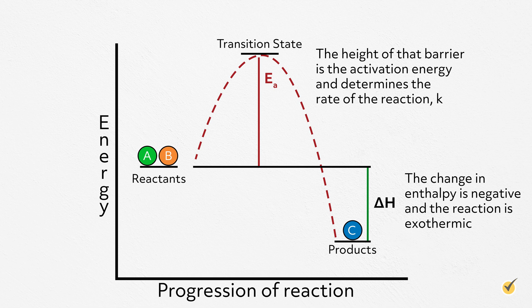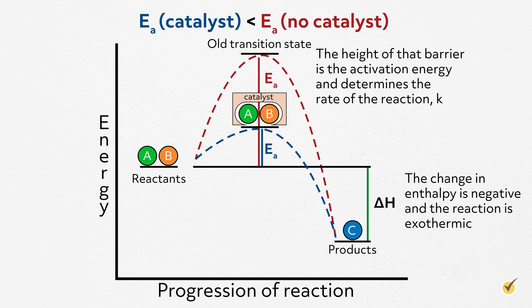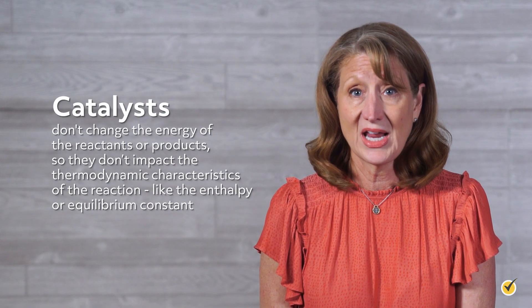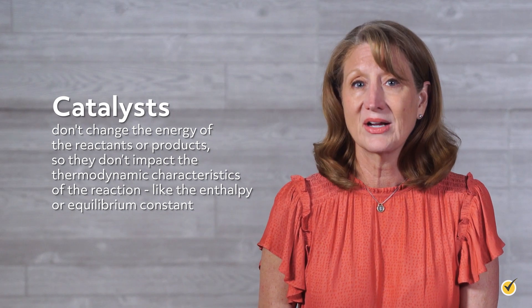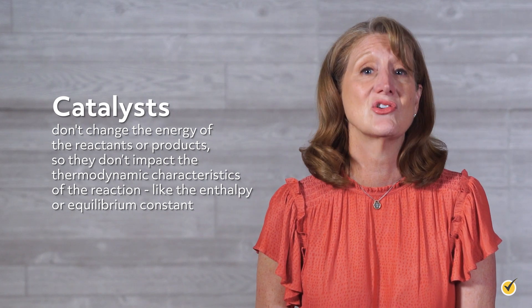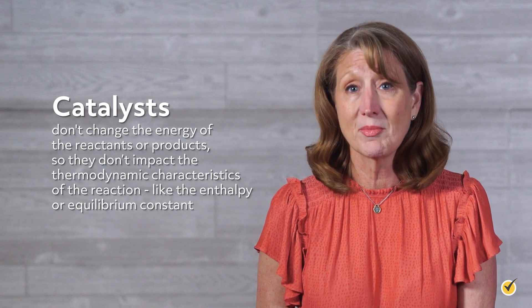So where do catalysts fit into all of this? When we talk about speeding up a reaction, we're talking about changing the activation energy or creating an alternative lower-energy path — and this is exactly what catalysts do. In our simple reaction coordinate, if we added a catalyst, it would either lower the energy of the transition state or provide an alternative reaction mechanism, which might be more complex, but still has a lower overall activation energy. Importantly, catalysts don't change the energy of the reactants or products, so they don't impact the thermodynamic characteristics of the reaction, like the enthalpy or equilibrium constant.